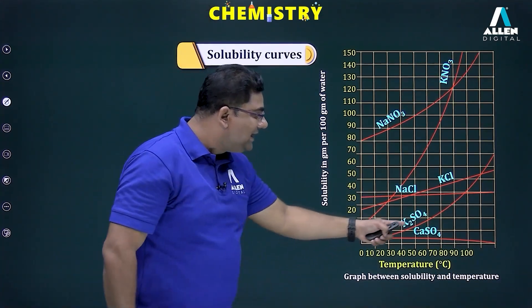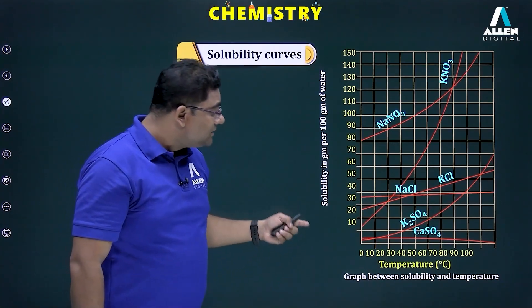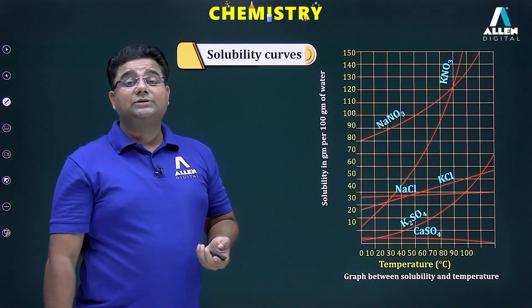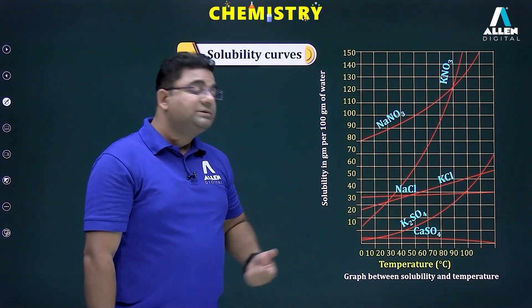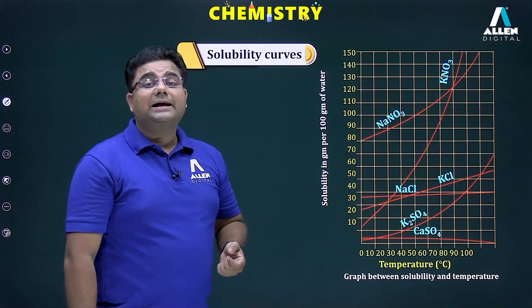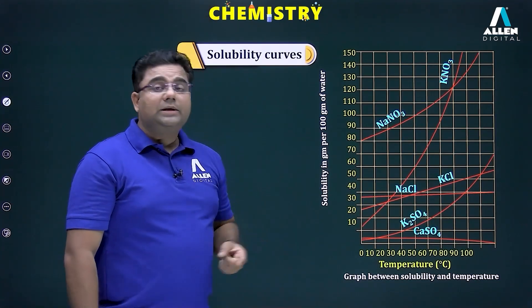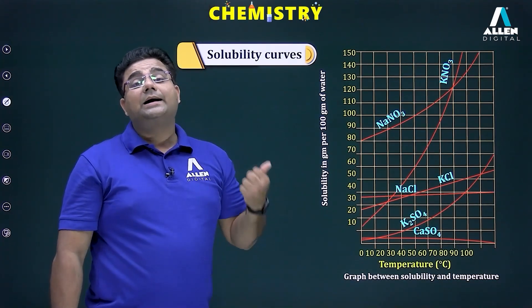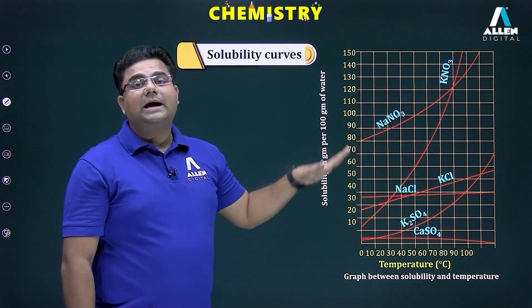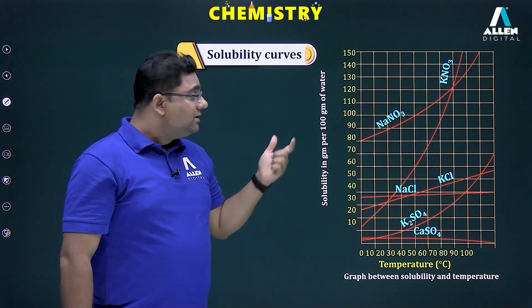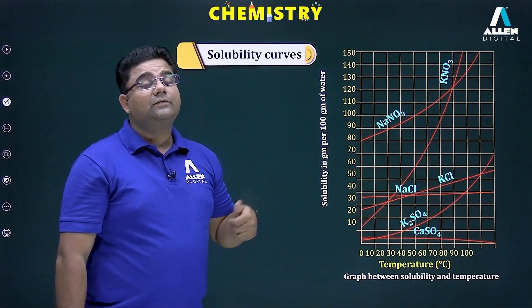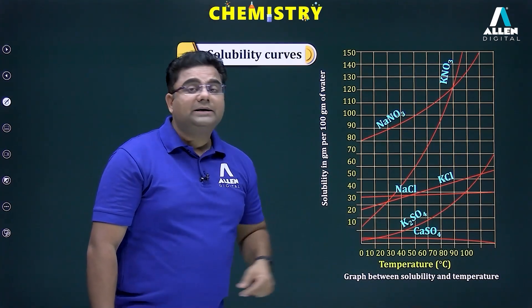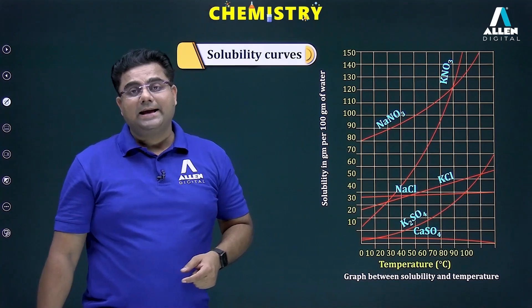An exception is CaSO4 (calcium sulfate) — its solubility decreases as temperature increases. This is because the dissolution of calcium sulfate in water is an exothermic reaction. To increase the solubility of CaSO4 in water, we must decrease the temperature. Generally, solubility increases with temperature, but remember the exception of CaSO4.